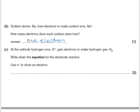At the cathode, hydrogen ions, H⁺, gain electrons to form hydrogen gas, H₂. Write the equation for this electrode reaction using e⁻ to show an electron. We start off with H⁺ ions and end up with H₂. To do that we must have two hydrogen ions which have each gained an electron: 2H⁺ + 2e⁻ → H₂.